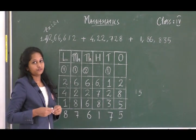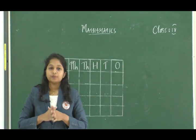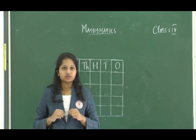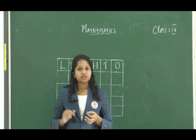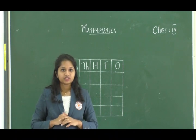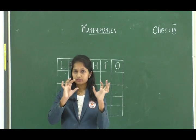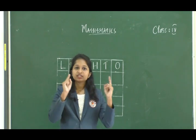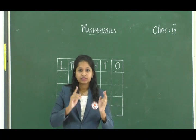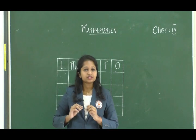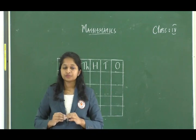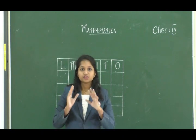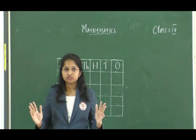Our next topic is properties of addition. The first property: when you add two numbers, if you add the first number to the second or the second to the first, there is no change. The second property: if you have three numbers to add, you can either add the first two and then add the last, or add the last two first and then add the first, or add the first and third and then add the second.